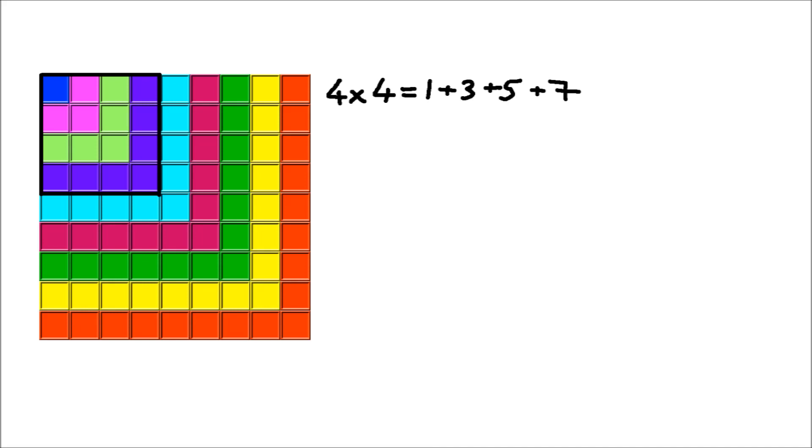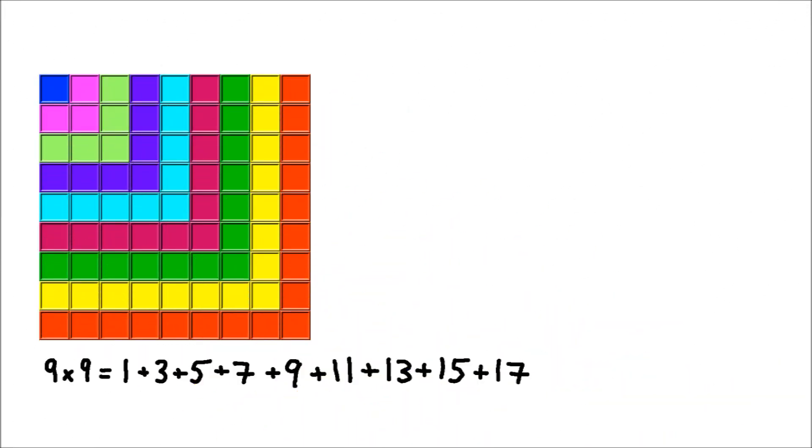So that when we get to the big square that we started with, the 9 by 9 square, we can see that that's the sum of the odd numbers from 1 up to 17. And you can see that any square number can be represented by the sum of odd numbers.